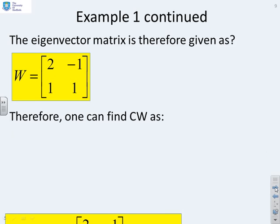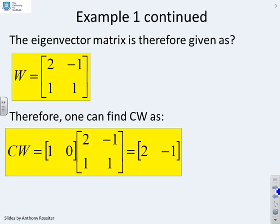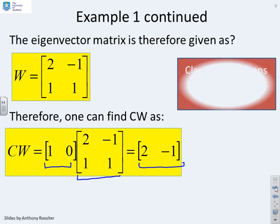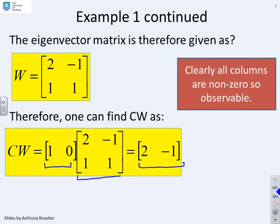And now I can find the matrix Cw. So Cw is going to be 1 0 times 2 1 minus 1 1. And I'm going to get here 2 minus 1. And what's the key point? Clearly, both columns are non-zero.